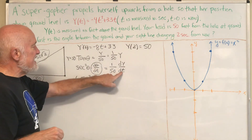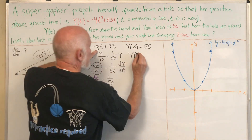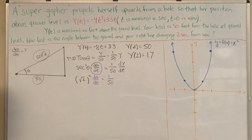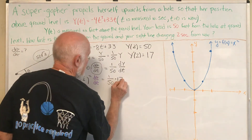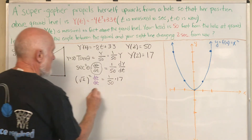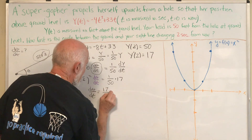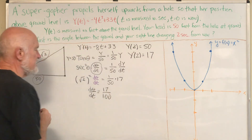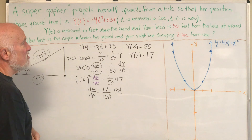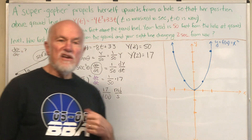At time t=2, dy/dt from the position derivative gives negative 16 plus 33, which is 17 feet per second. Plugging everything in: secant²(theta) is 2, so we get 2 · d theta/dt = (1/50)·17, meaning d theta/dt = 17/100. The angle is changing at 17 hundredths radians per second.